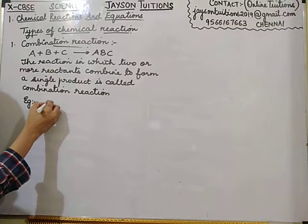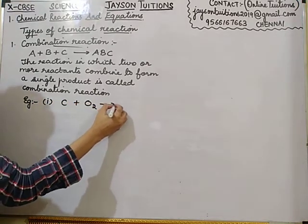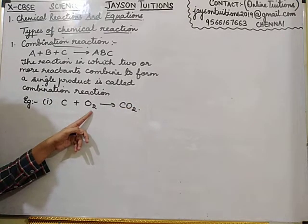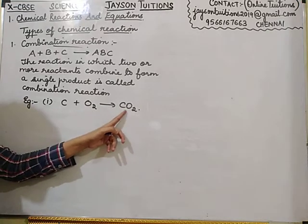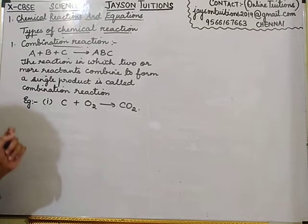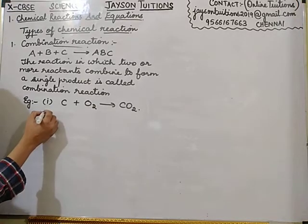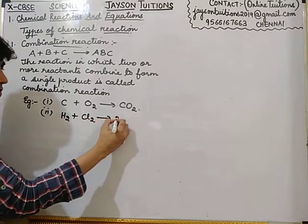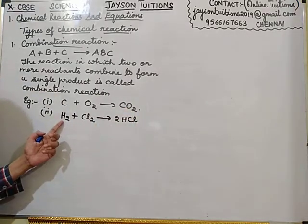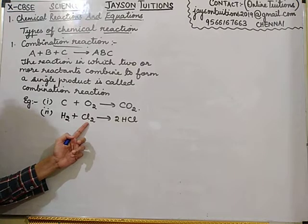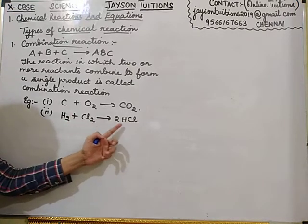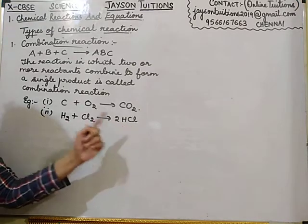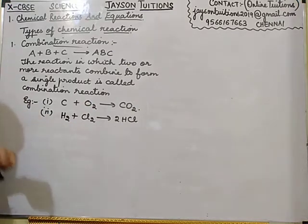Example: carbon plus oxygen gives carbon dioxide. Carbon is one reactant, oxygen is another reactant. Two reactants are combining to form a single product, so it is an example of combination reaction. Next example: H2 plus Cl2 gives 2HCl. Hydrogen is one reactant, chlorine is another reactant. Hydrogen and chlorine combine to form hydrogen chloride — two reactants forming a single product, so it is an example of combination reaction.